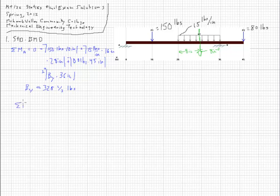And we take the moments about point B. They have to equal zero. And through similar means we find out that AY equals 141 and two-thirds pounds.